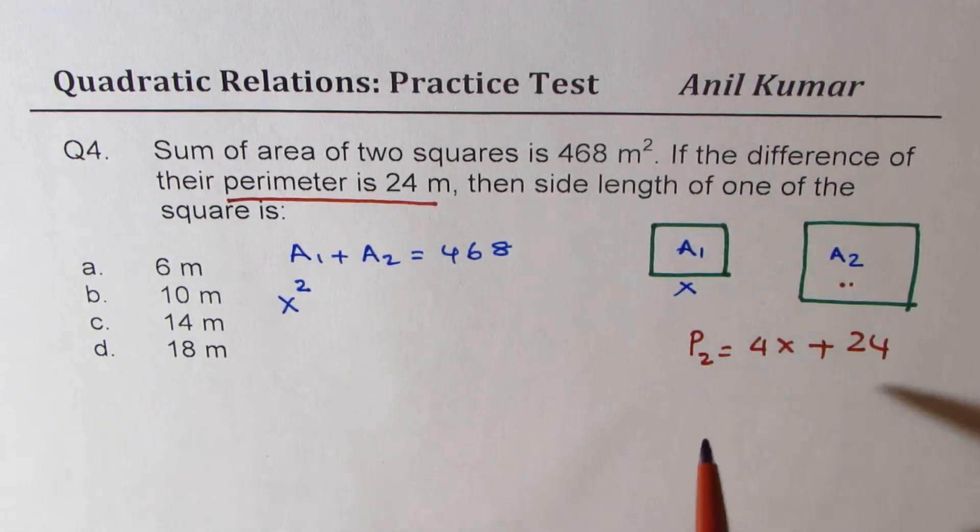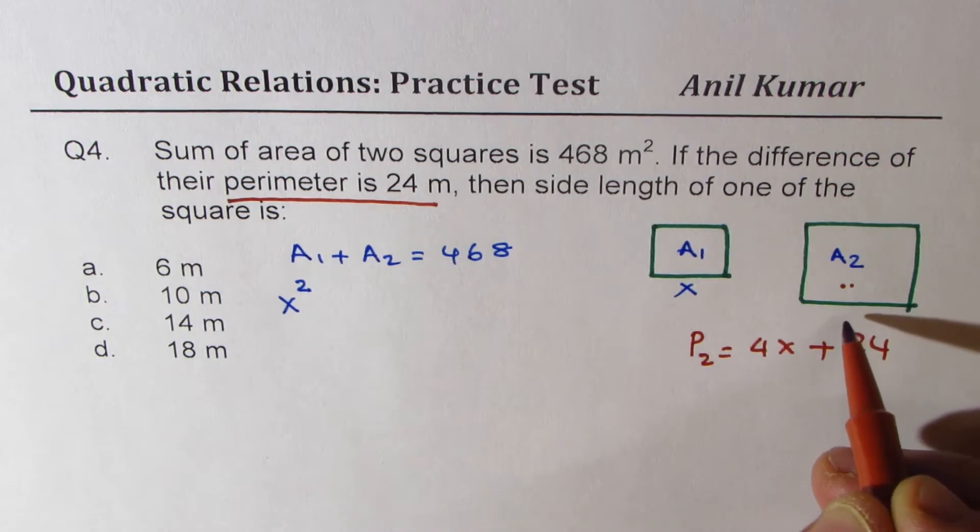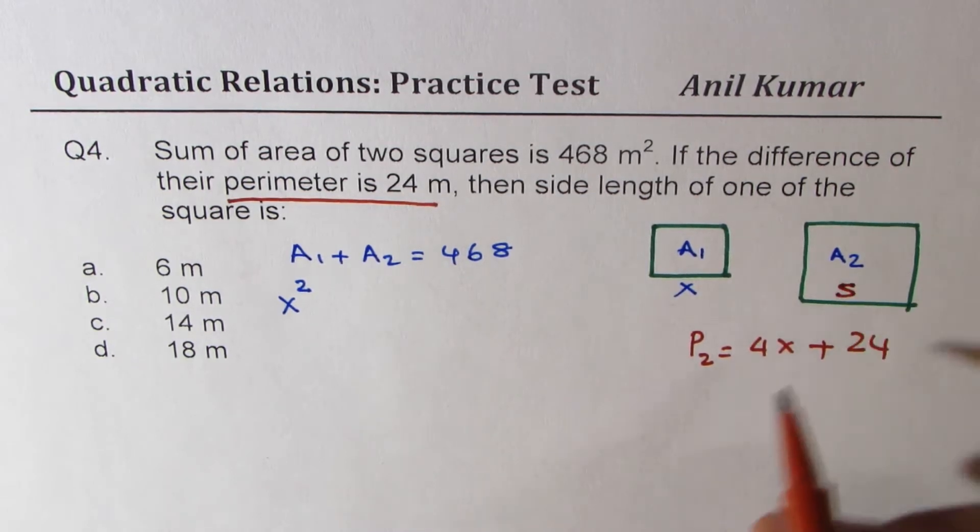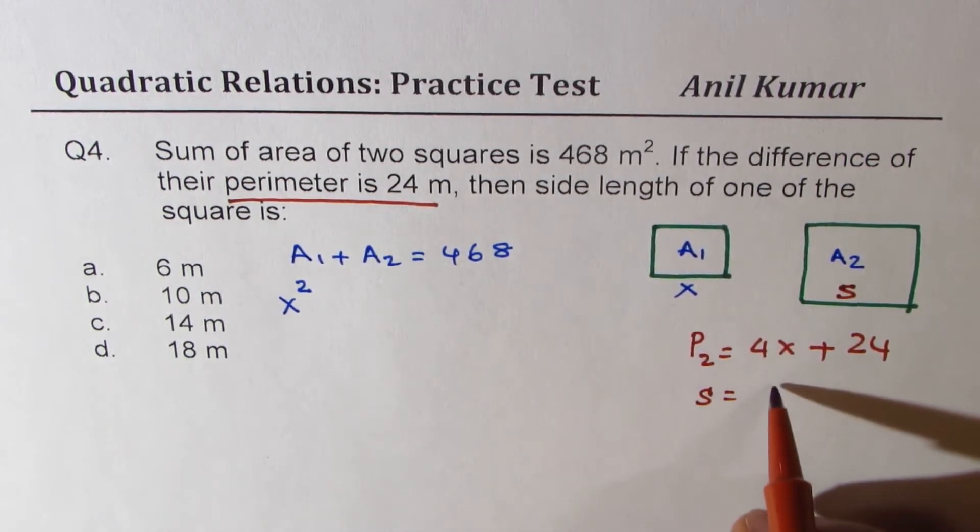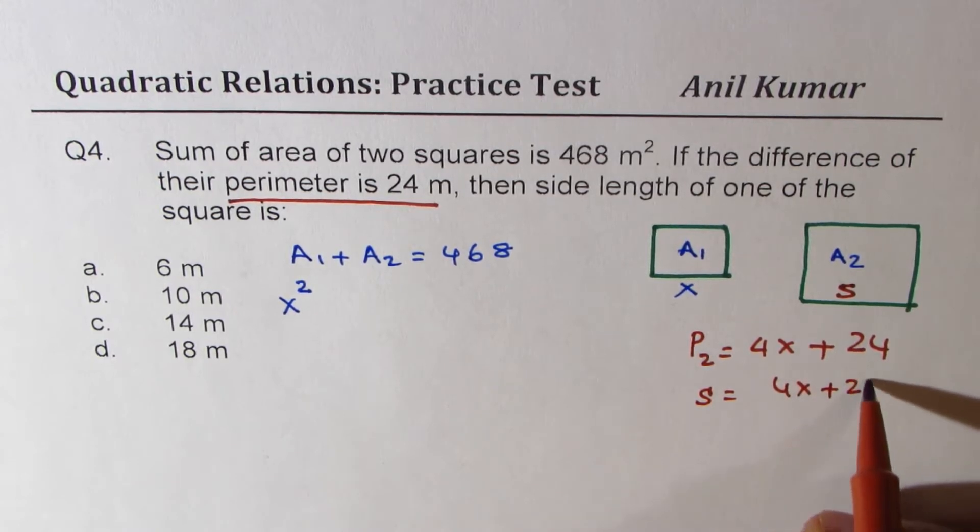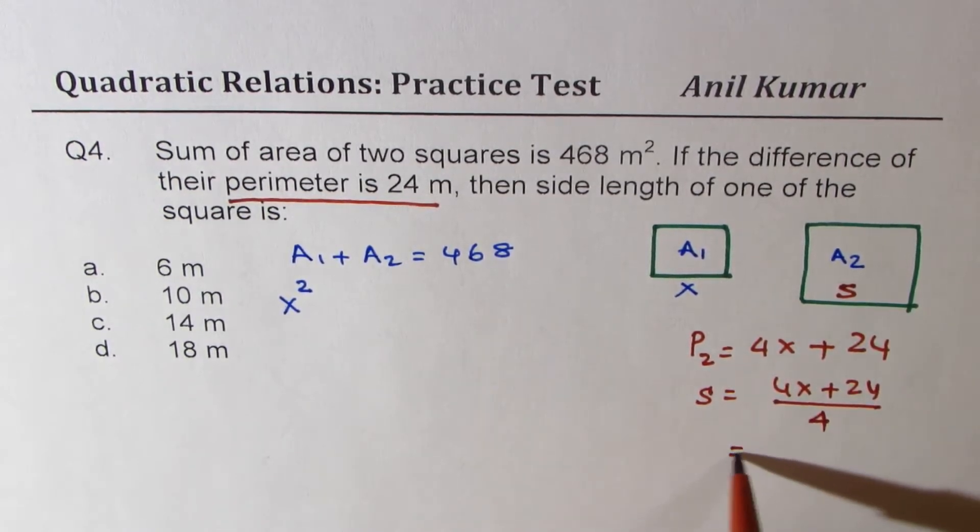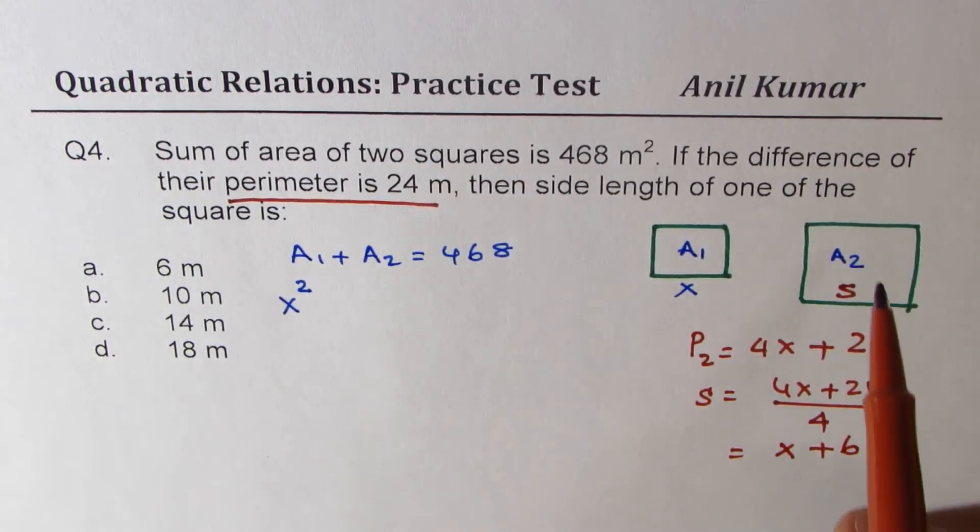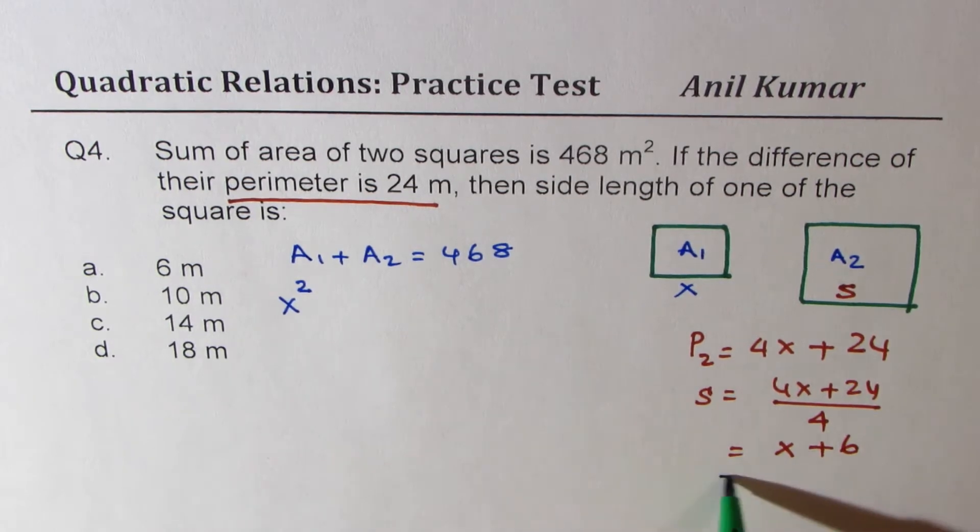You get an idea. If that is the perimeter, then what is going to be the side length for each? Side length will be 4x plus 24 divided by 4. So which gives us x plus 6. So each side in this case is x plus 6. Now this is very important to understand how we got it.